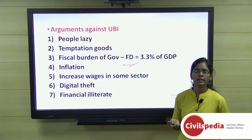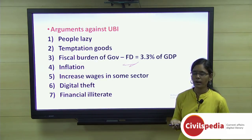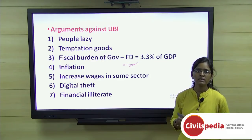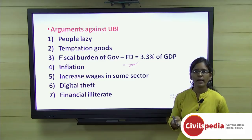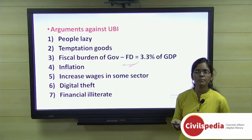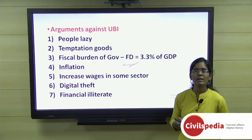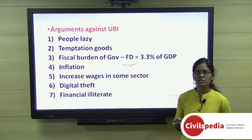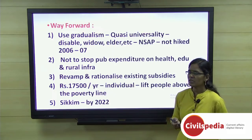Higher wages demanded by agricultural laborers due to alternative income options make agriculture less feasible. A sixth concern is the risk of digital theft: delivering UBI via direct benefit transfer through banks exposes recipients to cyber fraud. Even educated people struggle to protect themselves from digital theft; financially illiterate and uneducated people are even more vulnerable, requiring robust and accessible safeguard systems.